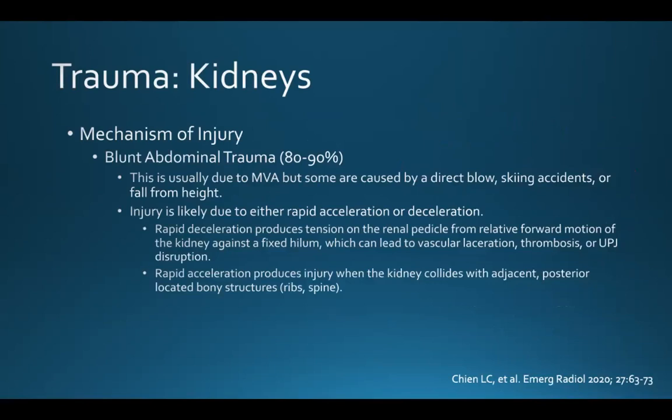Injury is likely due to either rapid acceleration or deceleration. Rapid deceleration produces tension on the renal pedicle from relative forward motion of the kidney against a fixed hilum. This can lead to vascular laceration, thrombosis, or disruption of the UPJ. Rapid acceleration produces injury when the kidneys collide with adjacent, posteriorly located bony structures like the ribs and the spine.